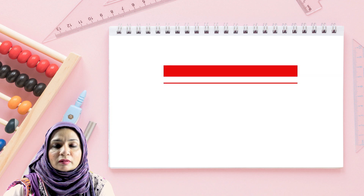Let's look at some real-life examples of inverse proportion. More number of men employed means less time to build a wall — you can see the directions of the arrows. Less number of men employed means more time to build the wall, so they are inversely proportional to each other. Another example: more number of taps means less time needed to fill the tub. As the number of taps increases, the time decreases; less number of taps means more time needed. So they are inversely proportional to each other.